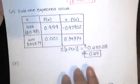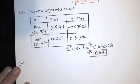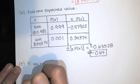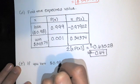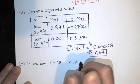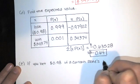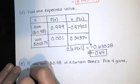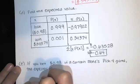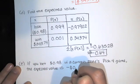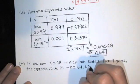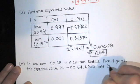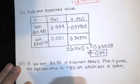Now, the last part of this question, part E, says this: if you bet 98 cents in a certain state's pick four game, the expected value is negative 64 cents. Which bet is better? Basically, the bet in the pick three game or the bet in the pick four game.